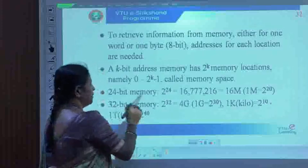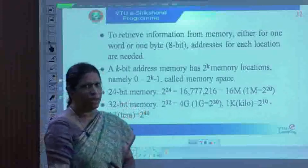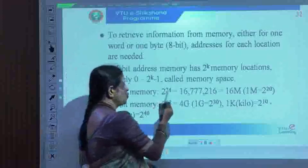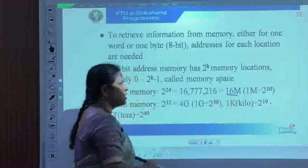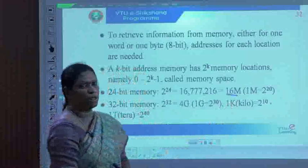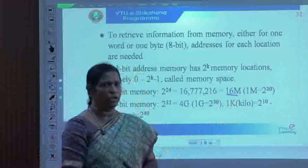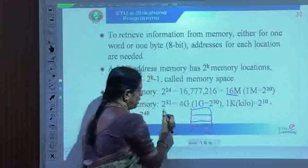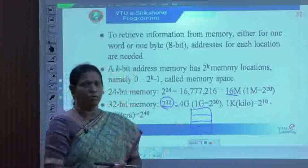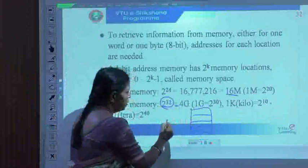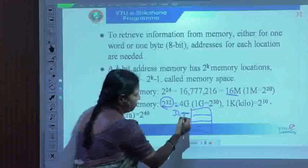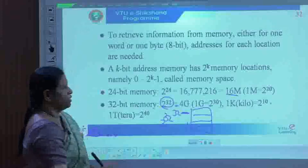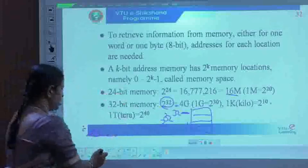For a 24-bit address, how many addressable locations are available? That contributes to 16 megabytes. Similarly, if you use a 32-bit address to represent a memory location, the size of the memory is 2 to the power of 32, which contributes to 4 gigabytes. So if we use a 32-bit length to represent each address, there are 2 to the power of 32 addressable locations.